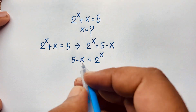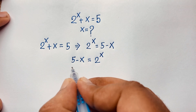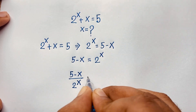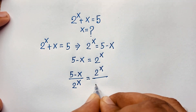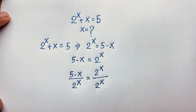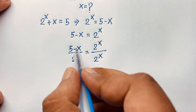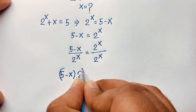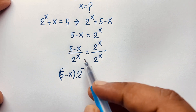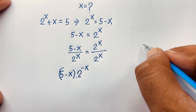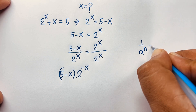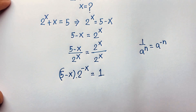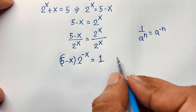At this point I divide both sides by 2 to the power x, so this expression becomes: (5 minus x) over 2 to the power x is equal to 2 to the power x over 2 to the power x. This gives us (5 minus x) times 2 to the power negative x, since 1 over 2 to the power x equals 2 to the power negative x — that is the exponential law: 1 over a to the power n equals a to the power negative n. And 2 to the power x divided by 2 to the power x equals 1.